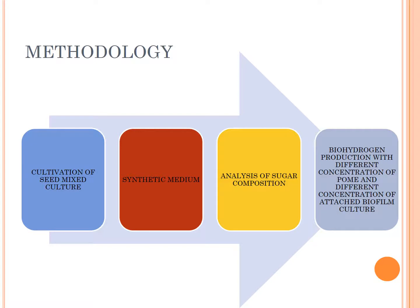Now I would like to discuss about methodology. There are four steps to conduct the experiment: first, cultivation of seed mixed culture; followed by synthetic media; then analysis of sugar composition; and finally biohydrogen production, identifying it at different concentrations of formate and different concentrations of attached biofilm culture.